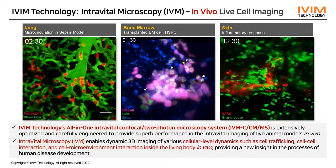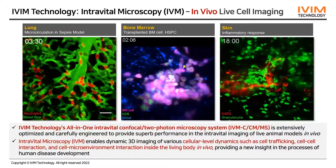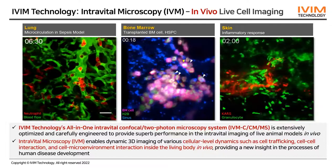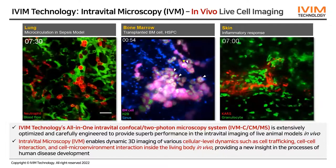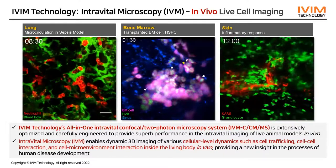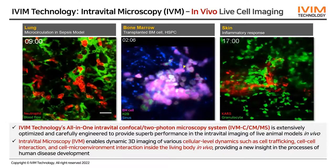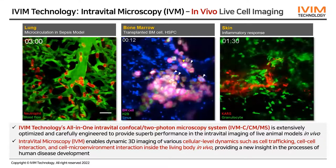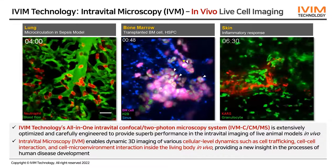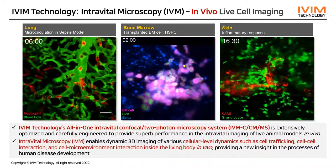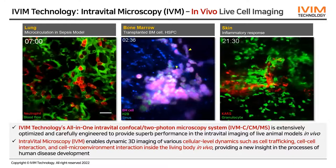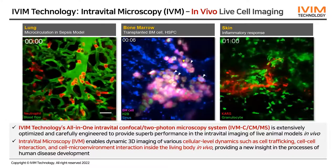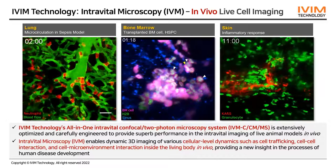For the application, we have many examples according to the organ of interest. Here are some examples of in vivo imaging in various organs such as lung, bone marrow, and skin, visualizing inflammatory responses. I will explain the details in the following slides.